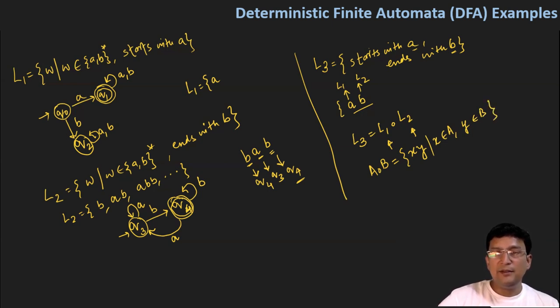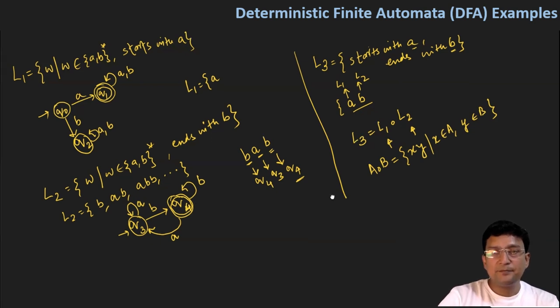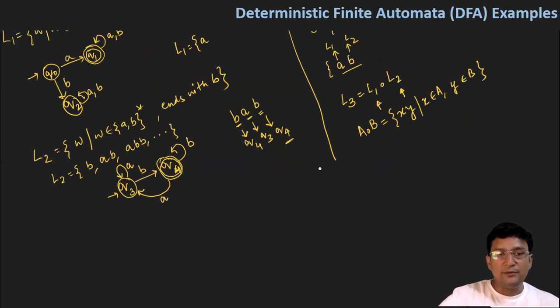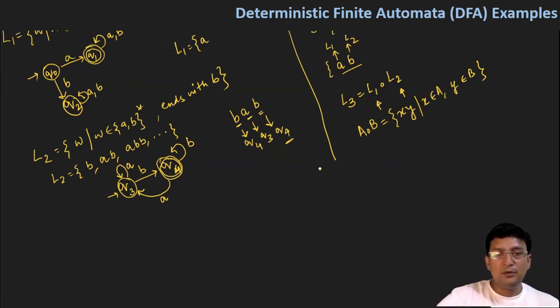So let's see if we can make automata for L3. It's something like concatenation. So if we concatenate both automata, it means q0 state, then q1 state with A, I should move to q1 state. I'm making it according to L1.